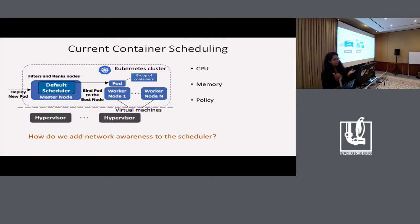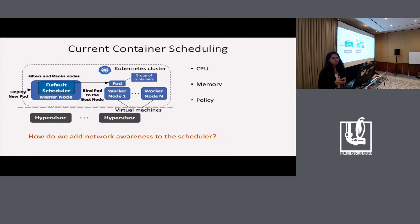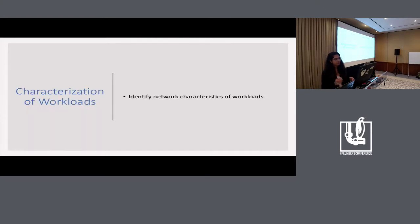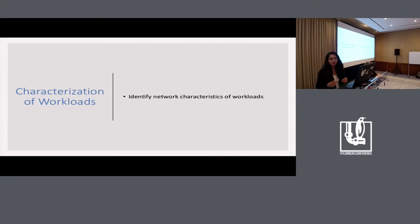As we saw earlier, most of these applications rely on network for their performance requirements. The question is how do we add network awareness to the scheduler? Resources like CPU and memory can be easily quantified, but that's not the case with network. So with this, I'll talk about how we can characterize workloads based on their network footprint.